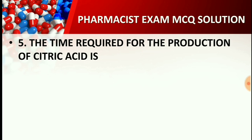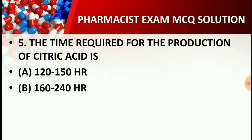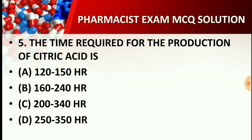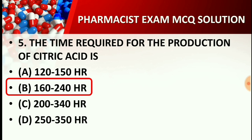Question number five: The time required for the production of citric acid is — Option A: 120 to 150 hours, Option B: 160 to 240 hours, Option C: 200 to 340 hours, Option D: 250 to 350 hours. The right answer is Option B: 160 to 240 hours. The total time required for production of citric acid is 160 to 240 hours.